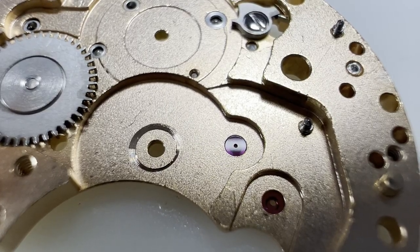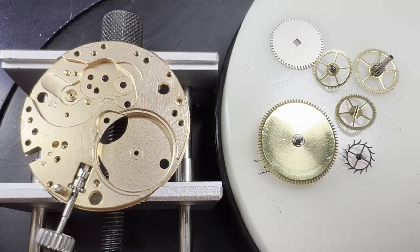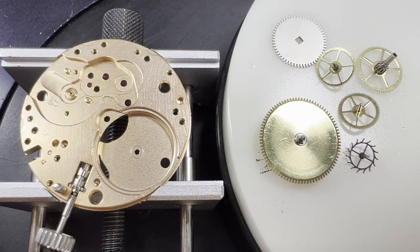And here is a close up of how clean the jewels need to be. Absolutely spotless. With the train wheel bridge ready, we can get the going train in.